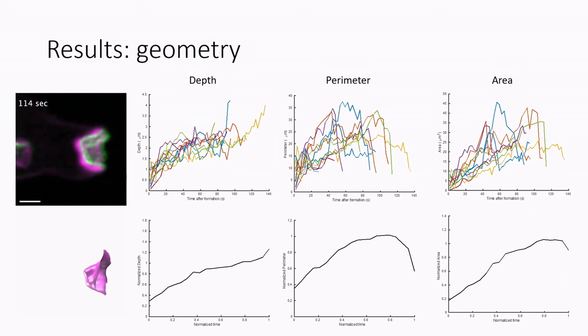But what we see is if we normalize everything in time and in the space dimension, just to get a look at how these, what sort of pattern these cups form in their geometry, we can see that we do see a kind of an expansion and then it slows down. And this is similar for depth and perimeter and area.